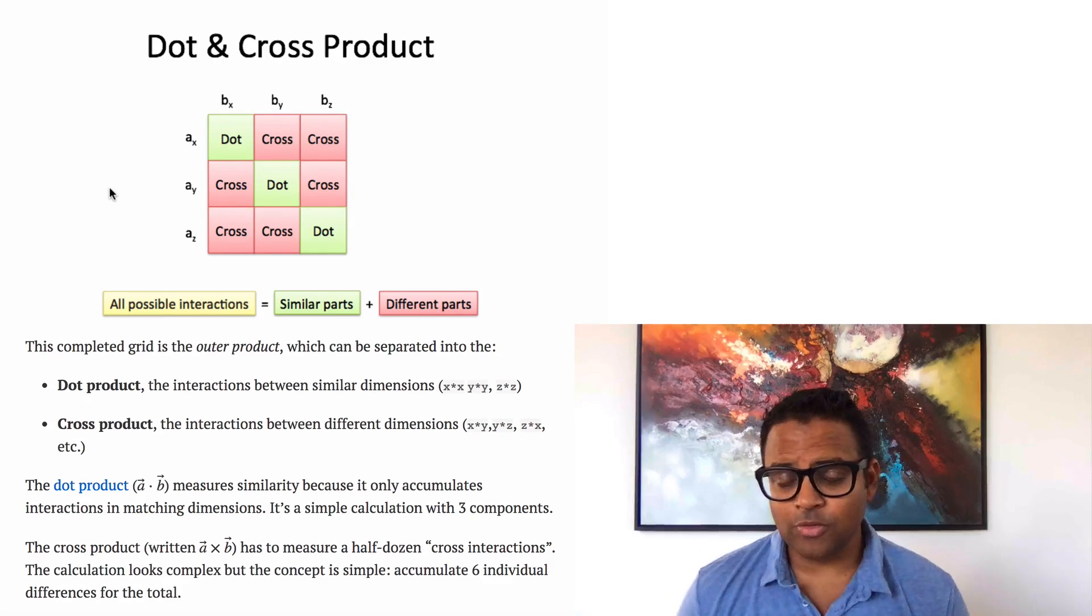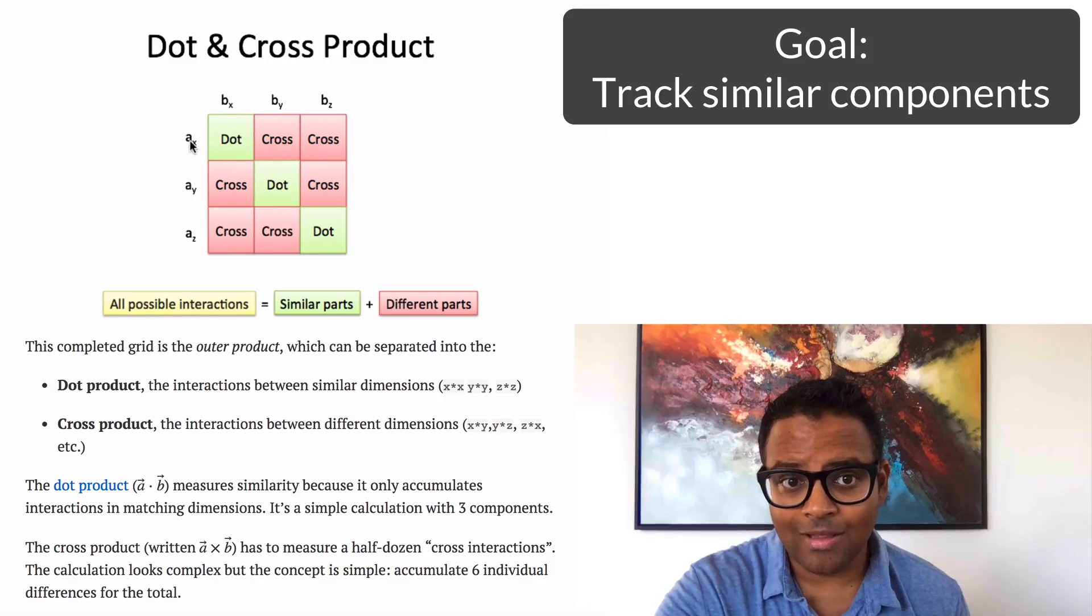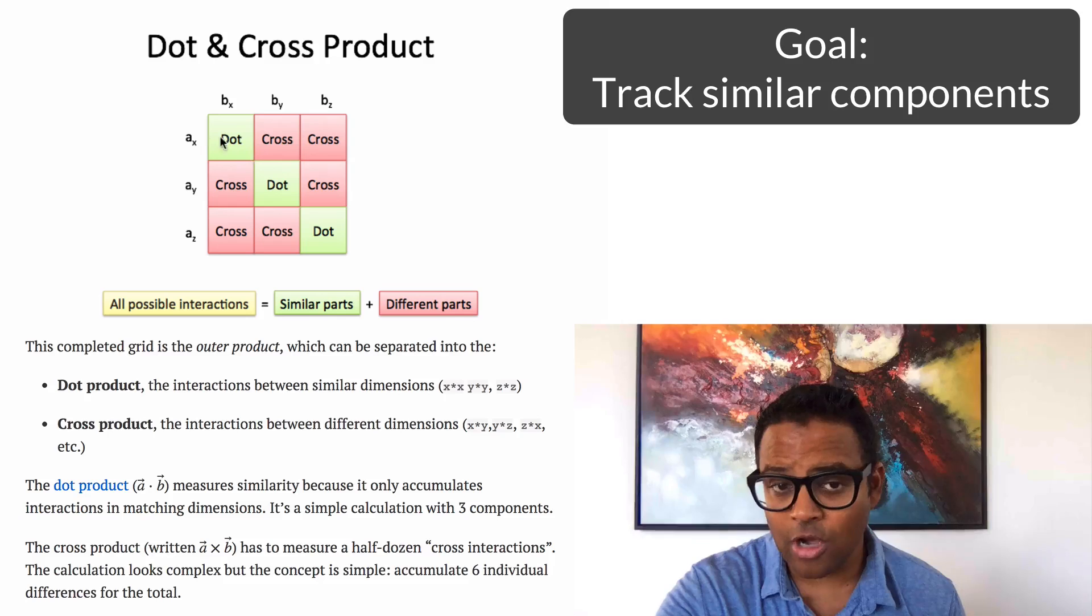With the dot product, we care about direction or movement in the same direction. So essentially we're multiplying the x components of a and b, the y components, and the z components, and we're adding those up. So the dot product is really tracking the similarity between the two vectors because it's looking at the shared components, things that they have in common.